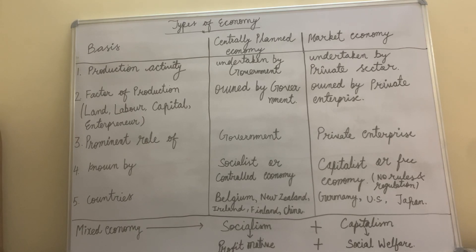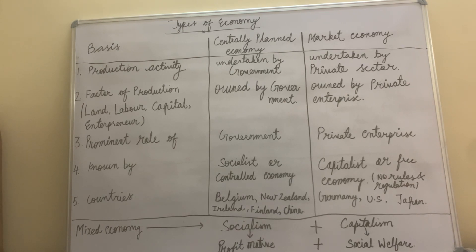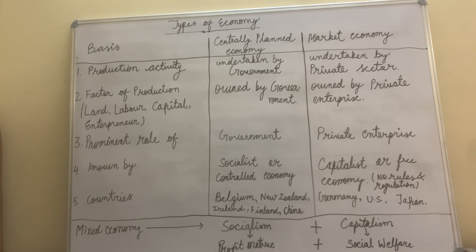A market economy is a free economy — there are no rules and regulations restricting entry. Anyone who has capital and entrepreneurship can come and build their own empire easily. This free economy is also called a capitalist economy — whoever has money can come and invest. Examples include Reliance and Geo — these are private enterprises.